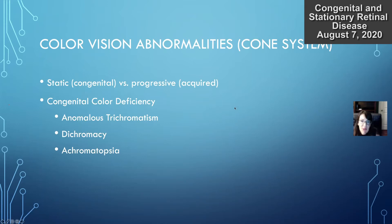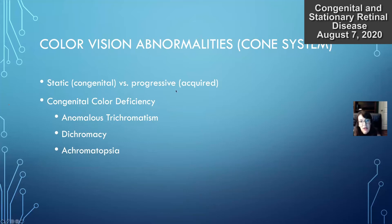With color vision abnormalities, you can have congenital versus progressive. Congenital color vision abnormalities tend to be bilateral, along the red-green color axis, and stationary — they do not progress or worsen throughout life. Males are predominantly affected, so a lot more X-linked. Progressive abnormalities can affect either males or females, tend to be unilateral, and are along the blue-yellow axis.